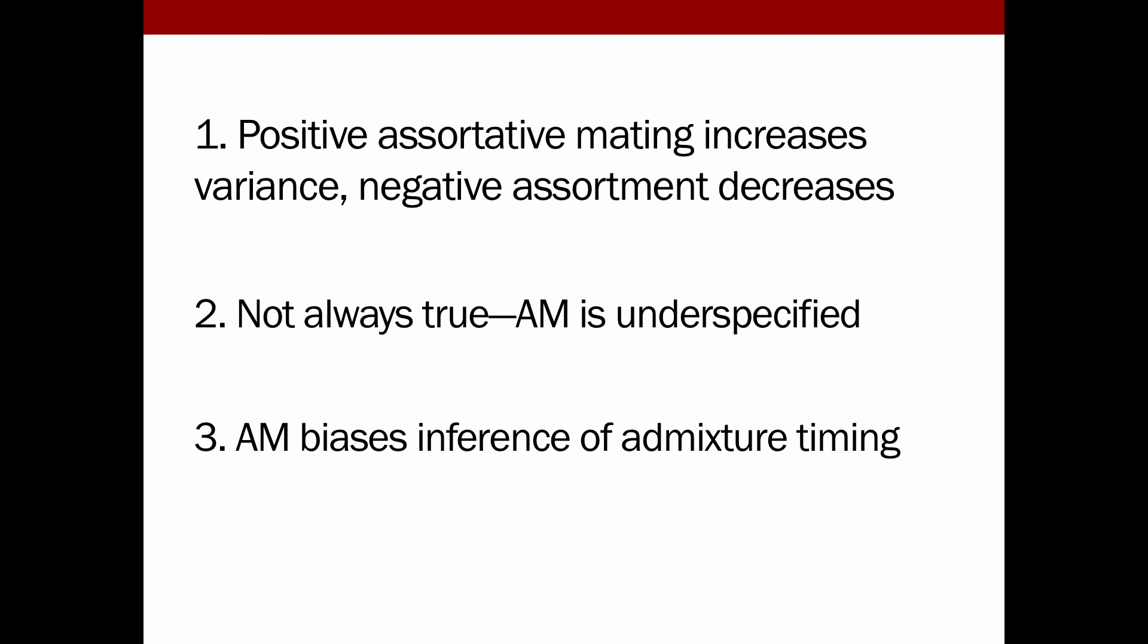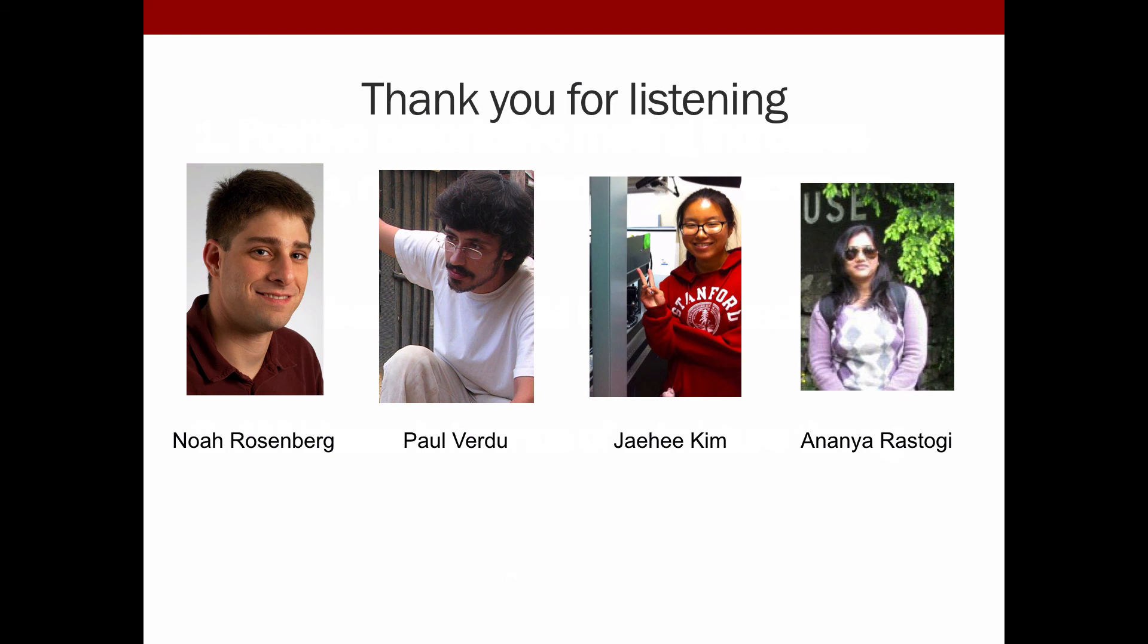To sum up, we know that positive assortative mating generally increases the variance while negative decreases it. And this is reminiscent of classic models of allele frequency assortative mating. However, it's not always true when we have to think about how we define these variables, especially when we're talking about inference. And with that, I want to thank you for listening and particularly thank my PhD advisor, Noah, and co-authors on this related work. Thank you.